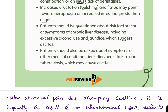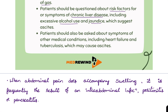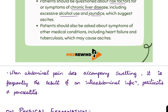The patient should also be questioned about risk factors for or symptoms of chronic liver disease, including excessive alcohol use and jaundice, which suggest ascites. Additionally, ask about symptoms of other medical conditions such as heart failure and tuberculosis, which may also cause ascites.